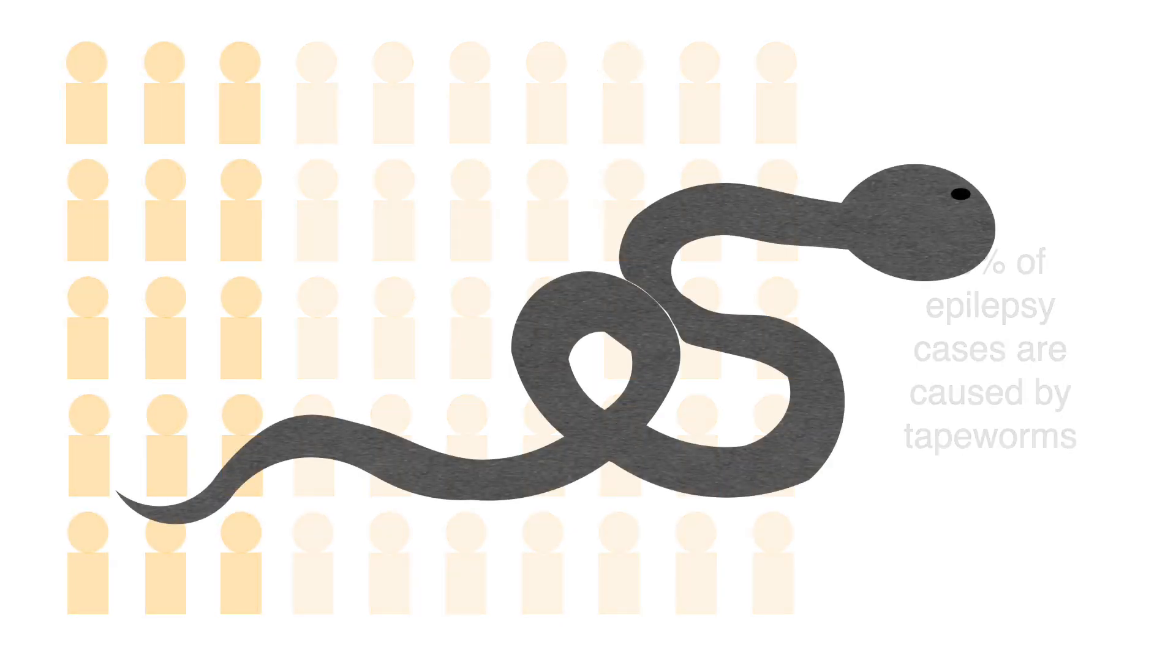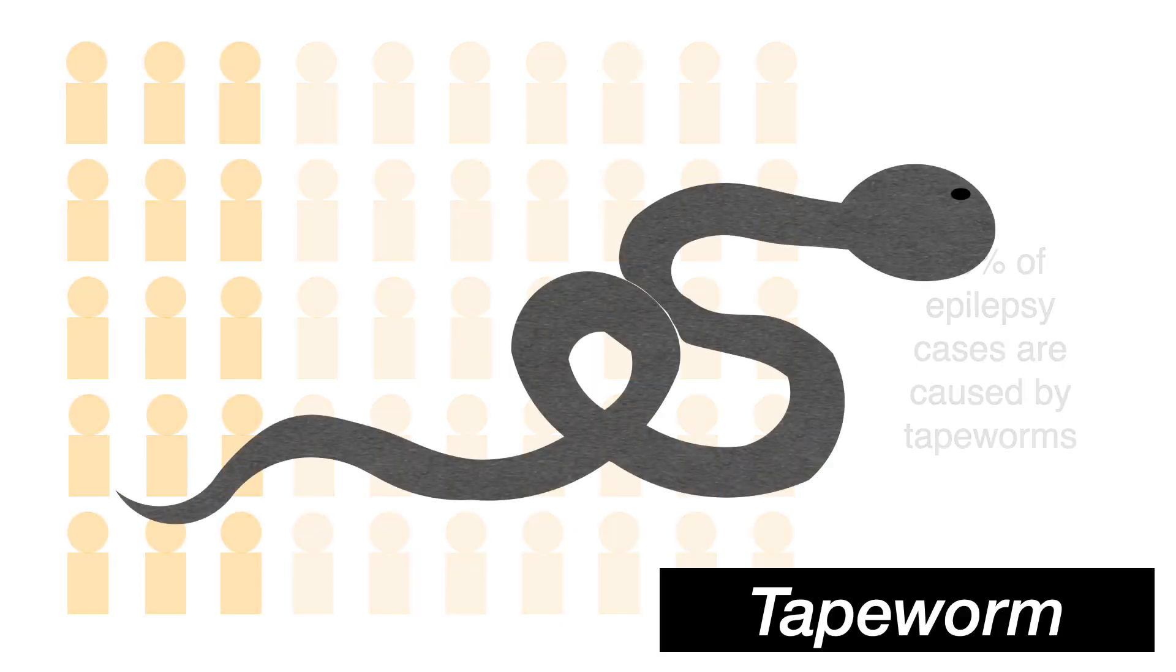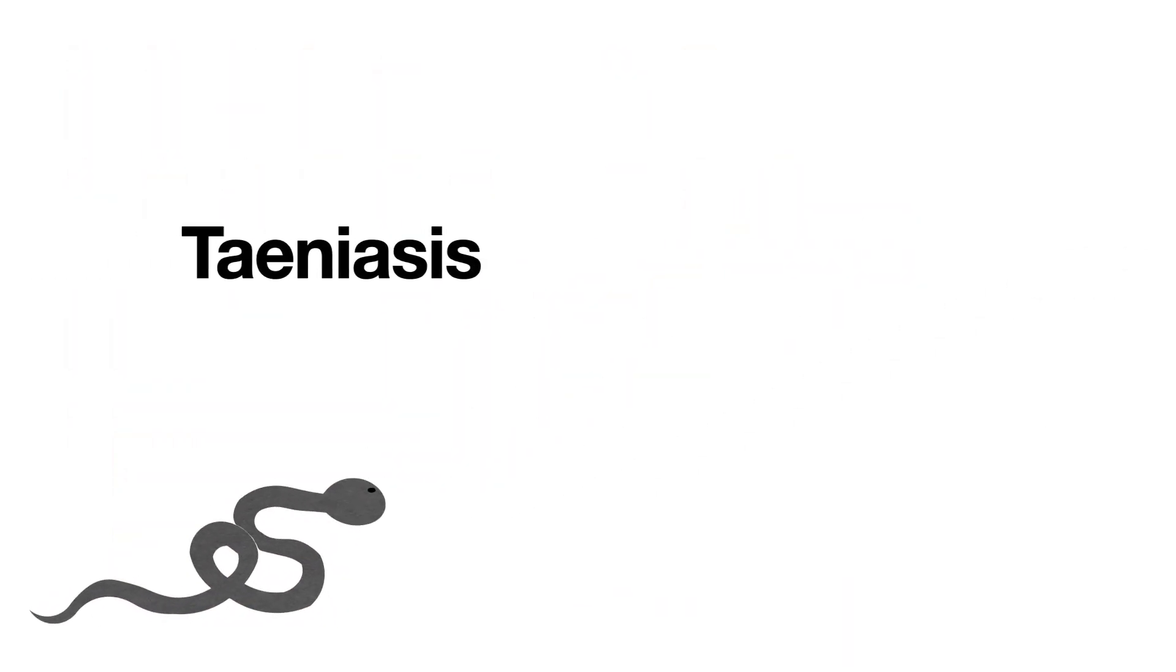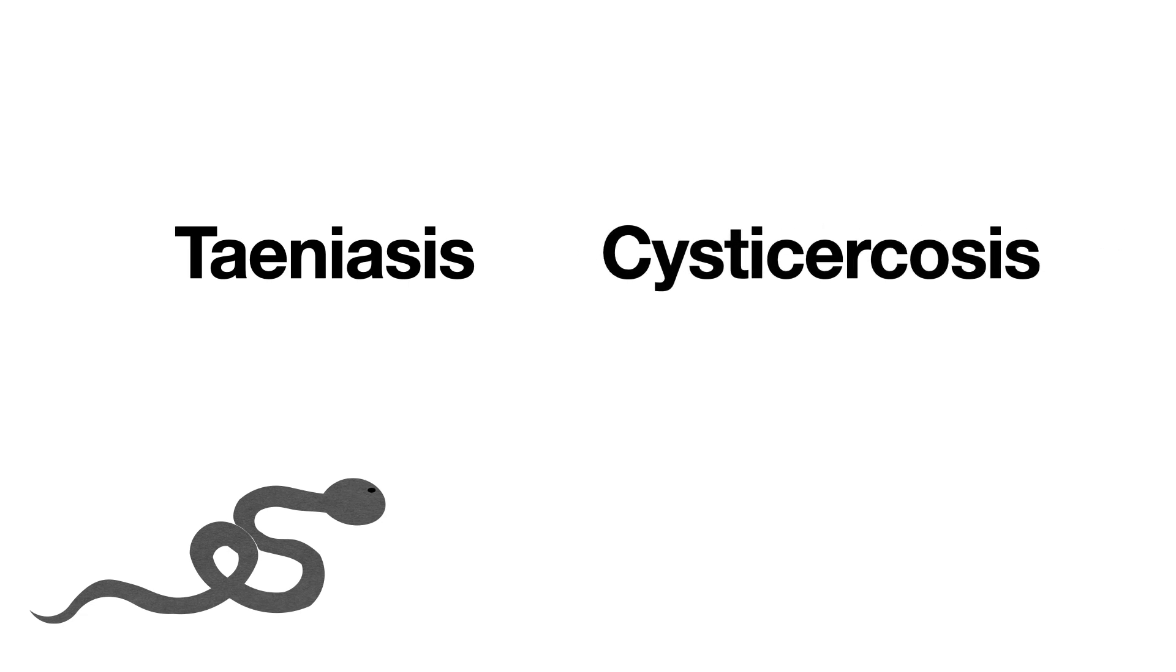A type of parasitic flatworm known as tapeworm can cause serious damage. Three species of tapeworm are known to infect humans, causing teniasis and cysticercosis, with T. solium being the most common. But the disease can be easily prevented.